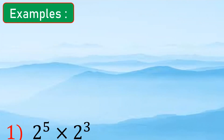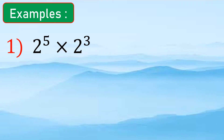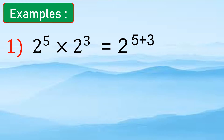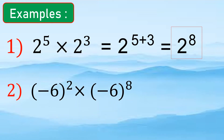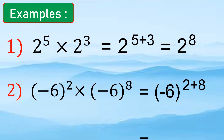Now let us have some examples. 2 to the 5th times 2 to the 3rd — we copy the same base and add the exponents, 5 plus 3, so 2 to the 8th is the answer. For negative 6 to the 2nd times negative 6 to the 8th, we copy the same base, negative 6, and add the exponents, giving us negative 6 to the 10th.